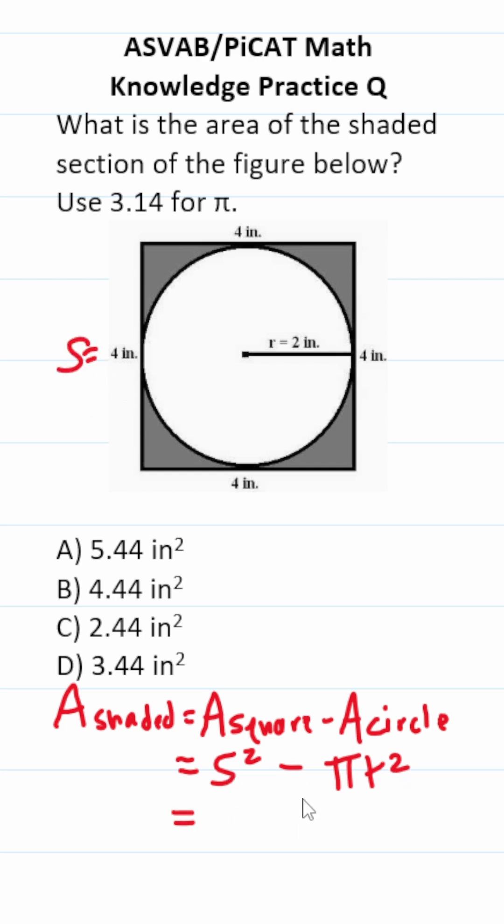We know the side length of our square is 4, so this is 4 squared minus 3.14 times the radius, which is right here. It's 2 squared.